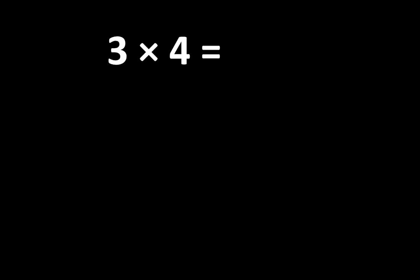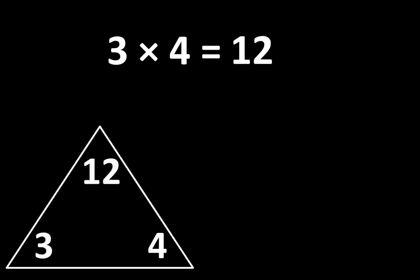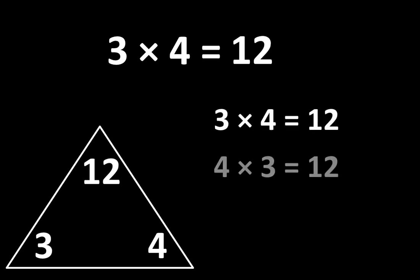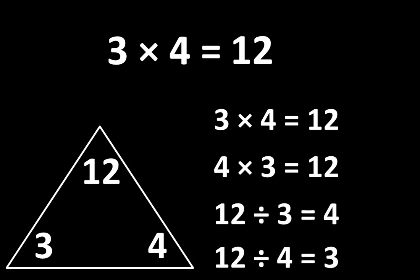3 times 4 is equal to 12. Let's examine some ways that 3, 4, and 12 are related to each other. To begin, if 3 times 4 is equal to 12, then 4 times 3 is also equal to 12. And since multiplication is related to division, we also know that 12 divided by 3 is equal to 4, and 12 divided by 4 is equal to 3.